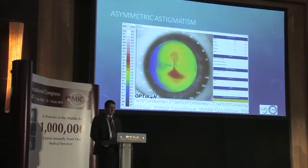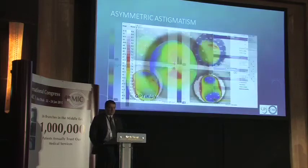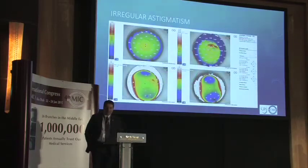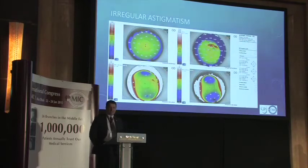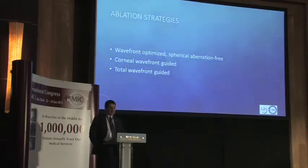Here is another example: asymmetric astigmatism — again the toric IOL will not be able to compensate for this asymmetry. Similarly, when you have irregular astigmatism generated by any reason, you may not be very accurate in measuring corneal astigmatism preoperatively. These are cases where you may want to consider a laser procedure at second stage.